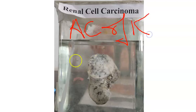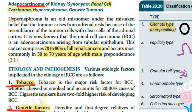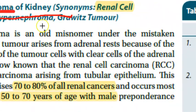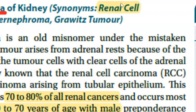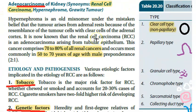It also has one more name called Grawitz tumor. So there are four names for the same thing: renal cell carcinoma, adenocarcinoma of kidney, hypernephroma - which is an old name they don't use now - and Grawitz tumor.